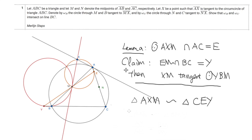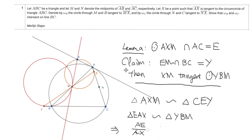Before moving on, we remark that there is another pair of similar triangles: triangle EAX and triangle YBM. It is easy to prove in the same way that triangle EAX is similar to triangle YBM. In particular, this implies that AE over AX equals YB over BM.